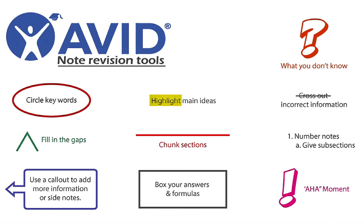Using a highlighter, you can highlight main ideas for the lesson. Using a divider bar, you can divide up large sections of information. Boxing your answers and formulas helps you sort through equations and your work to find the answer. Place a question mark next to a sentence, vocabulary term, or idea to remind you that you still have an unresolved question.